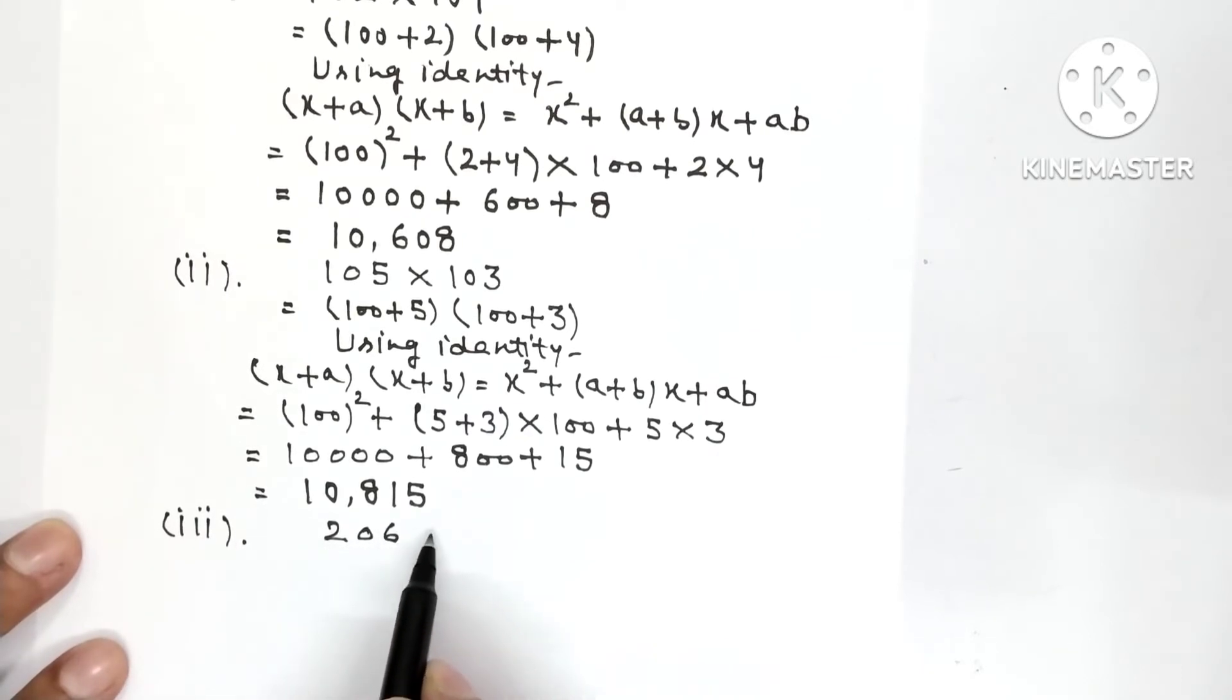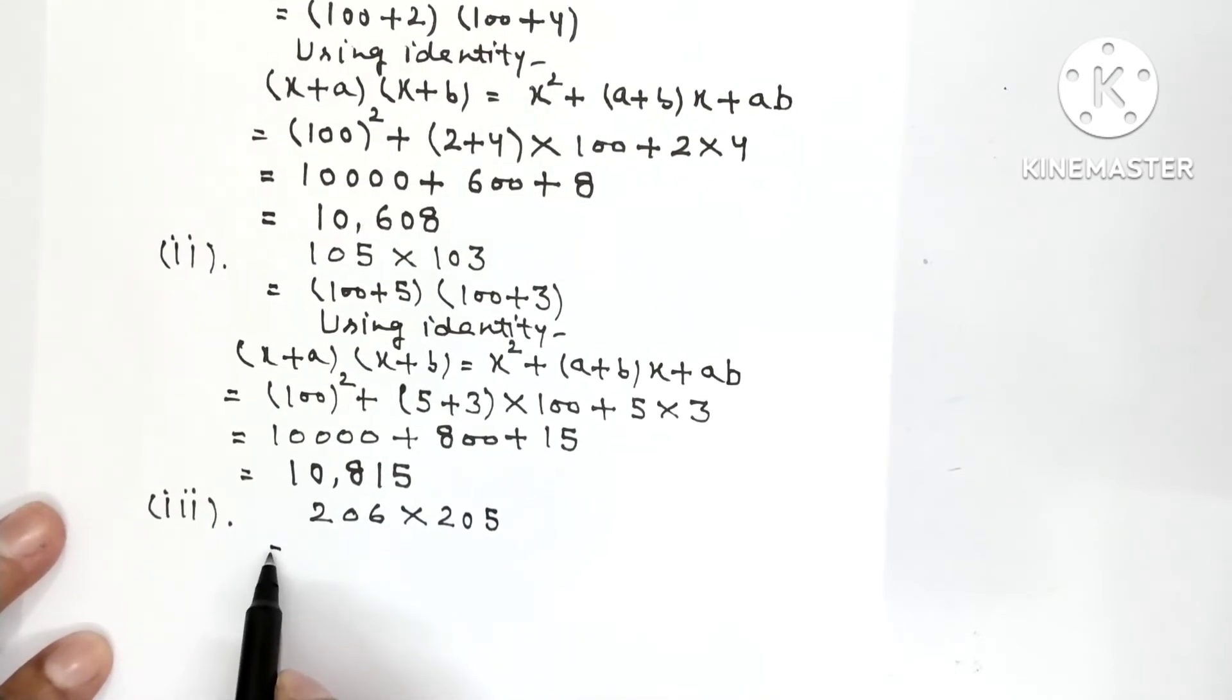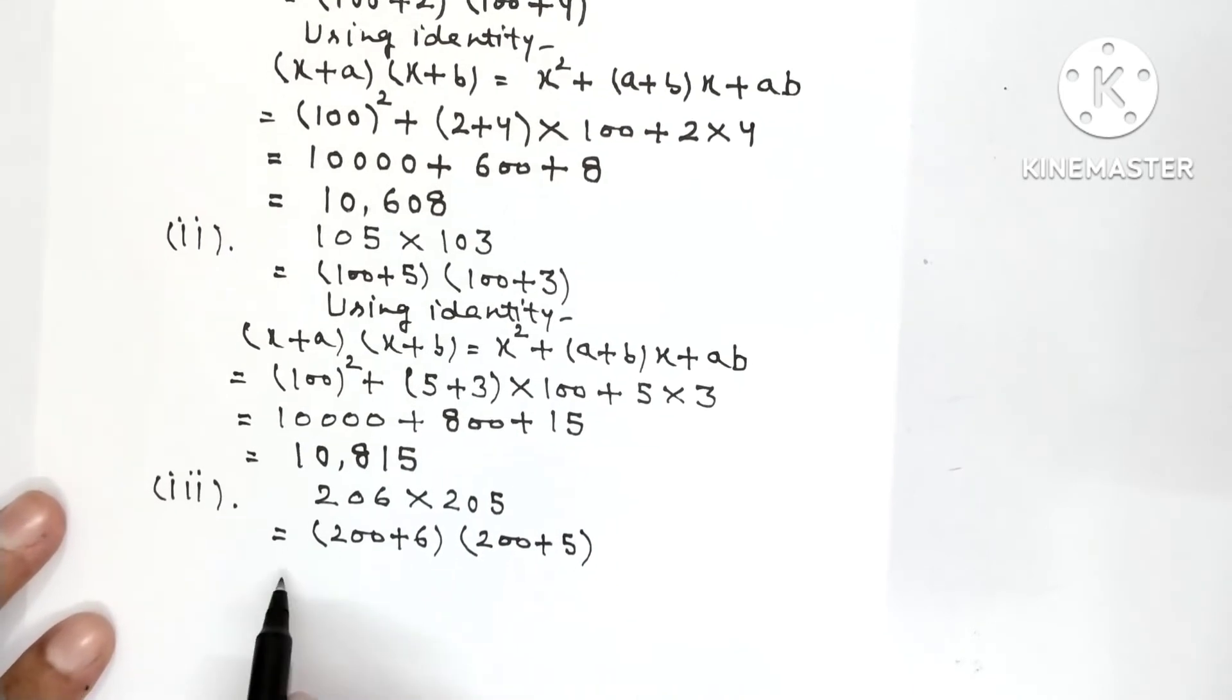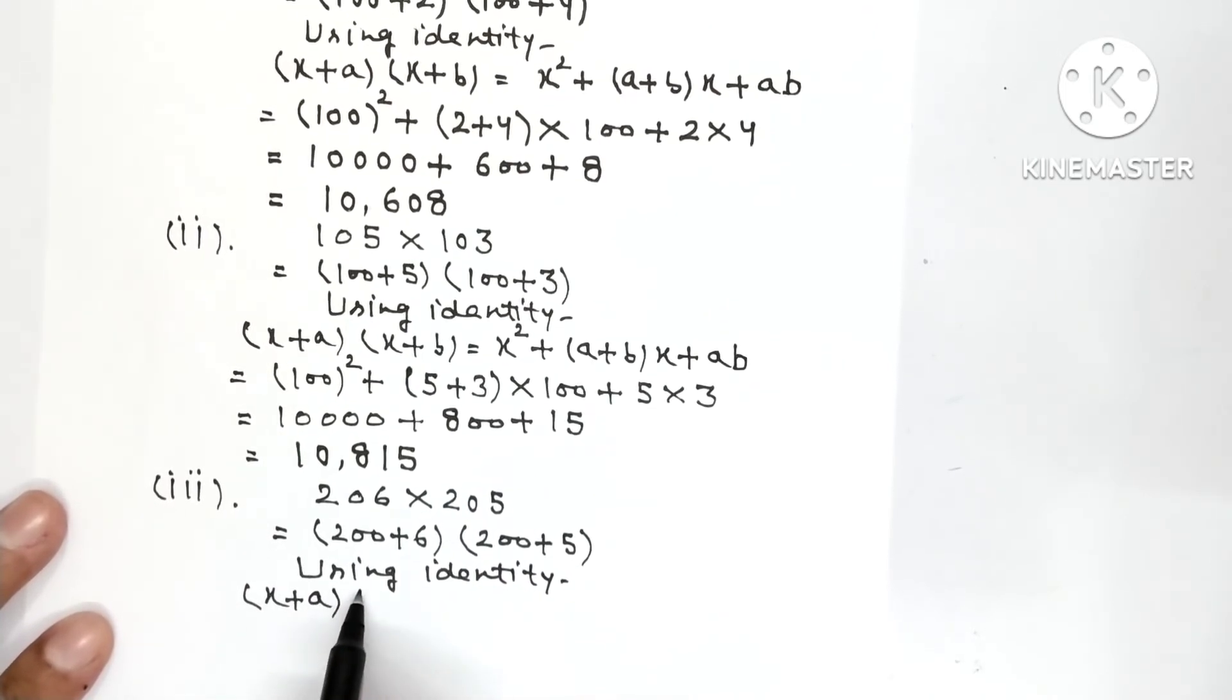Part number 3: 206 multiplied 205. So it will be (200 + 6) into (200 + 5). So here again this identity, using identity (x + a)(x + b), it is equal to x² + (a + b)x + ab.